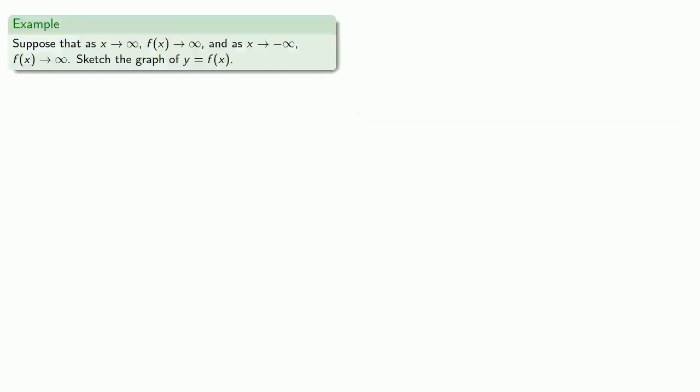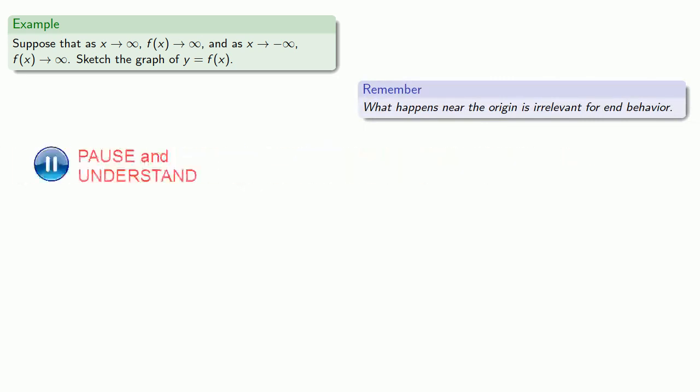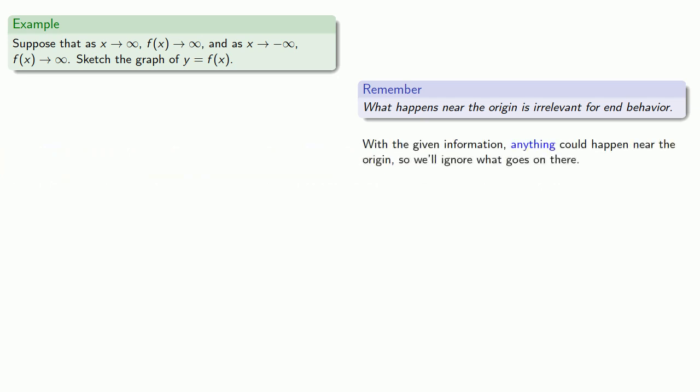For example, suppose that as x goes to infinity, f of x goes to infinity, and as x goes to minus infinity, f of x goes to infinity. We can use this to sketch the graph of y equals f of x. What's important to remember is that what happens near the origin is irrelevant for end behavior, so anything could happen near the origin and we'll ignore what goes on there.